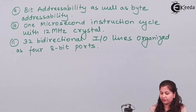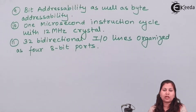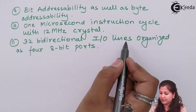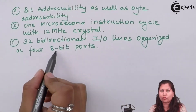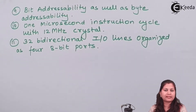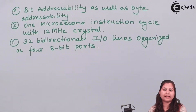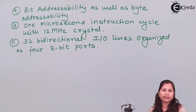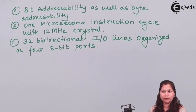Out of the 40 pins of the 8051, there are 32 bidirectional input/output pins organized as four 8-bit ports. These banks can be used as input/output ports, and because they act as both input and output lines, they are bidirectional.